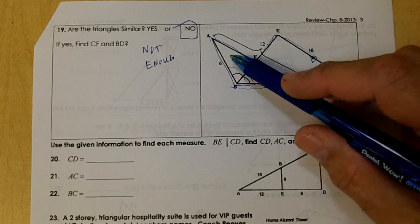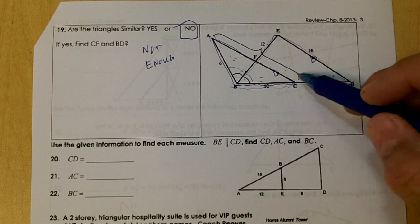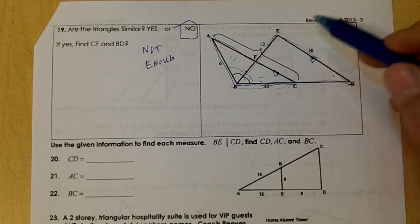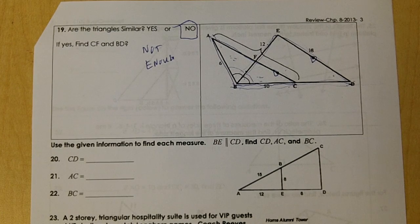We need this angle to be the same as this angle, this angle to be the same as this angle, and this angle to be the same as this angle. And we don't have the information to get that, so there's not enough information to do this.